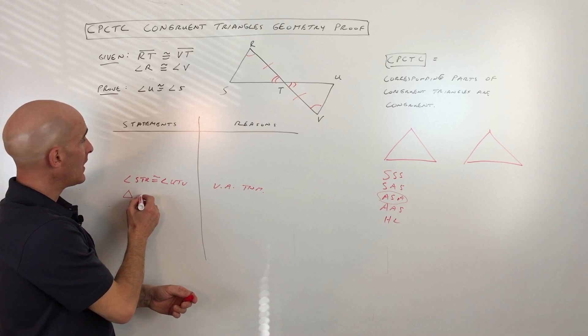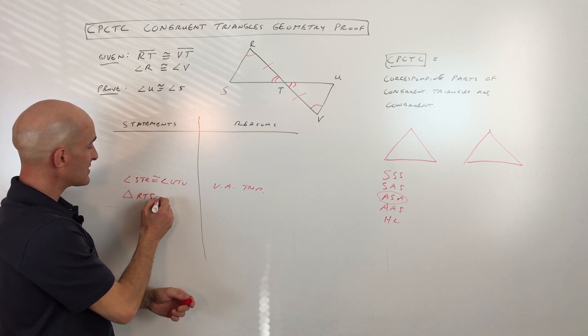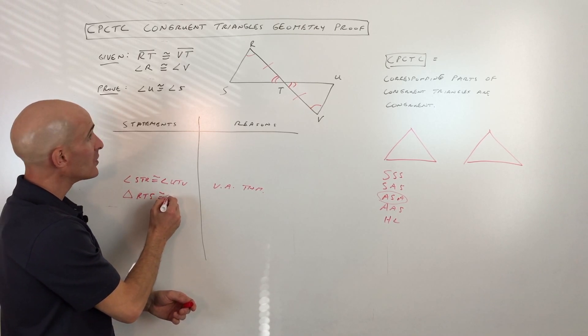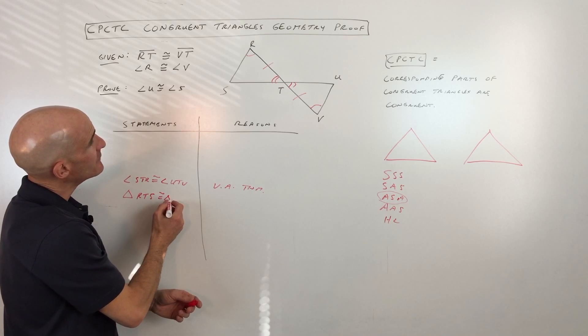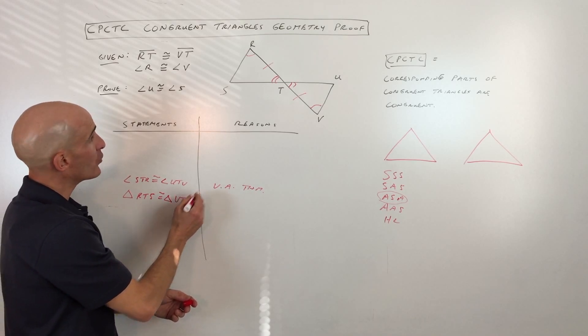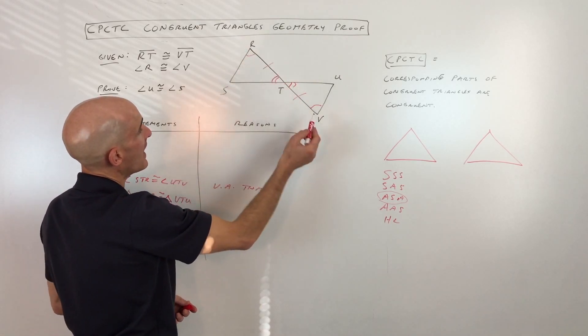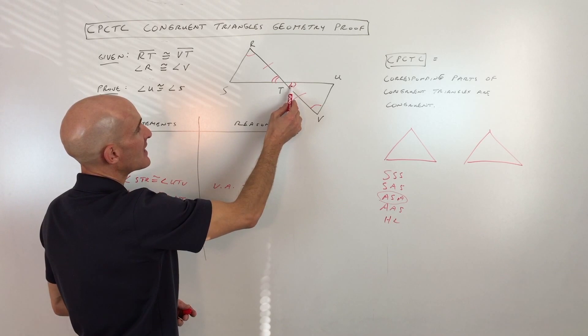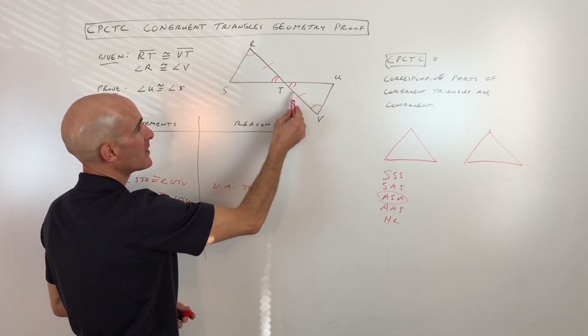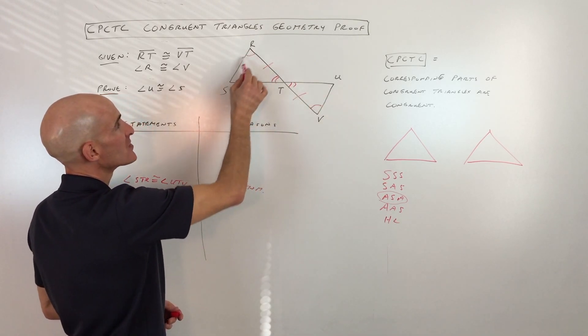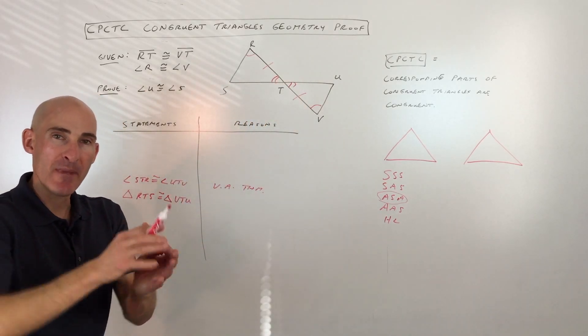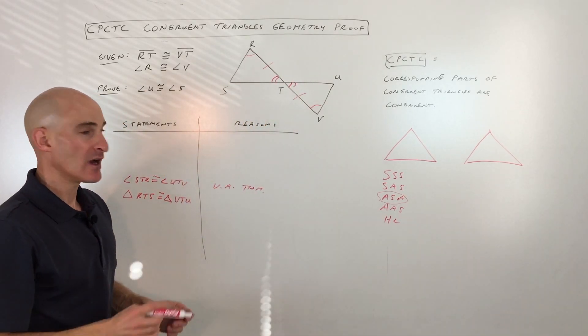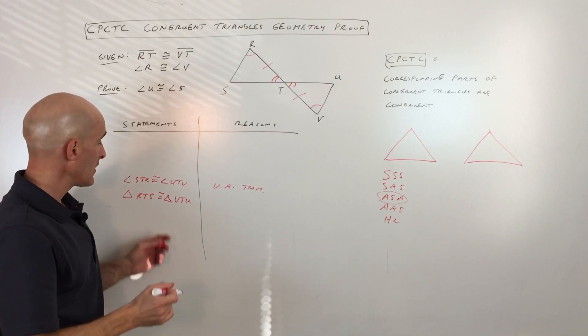So we have triangle RTS is congruent to triangle, let's see, VTU. Now the order is important. Notice how I went RTS VTU. I went from this angle with one arc to this angle with two arcs to this angle with no arcs and then back. So I went one, two, zero, one, two, zero. So I'm going around so that when I match them up, they're in the same relative position to one another.